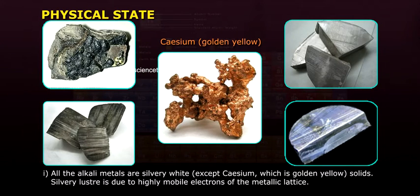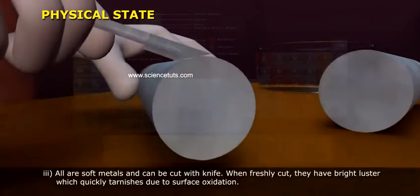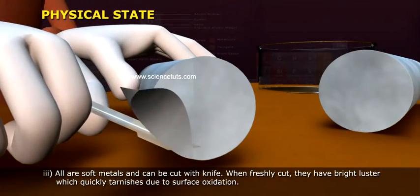2. Softness also increases from Li to Cs due to weakening of interatomic attraction. 3. All are soft metals and can be cut with knife.